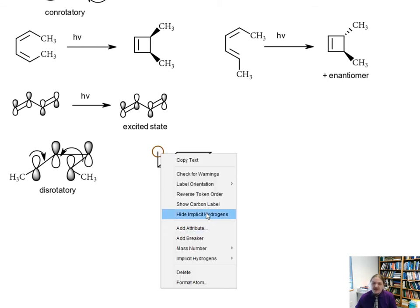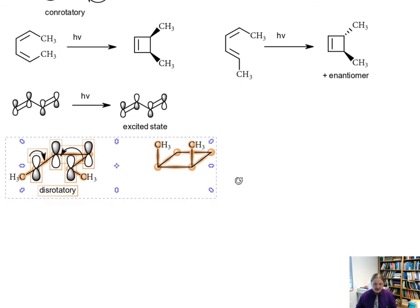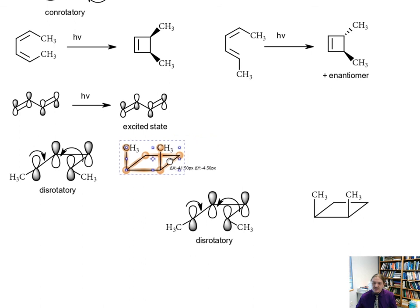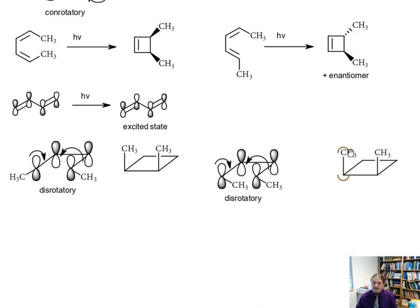In this case here we get syn when the two methyl groups are pointed to the outside or to the inside. And if we had the case where the two methyl groups were pointed one outside, one inside, then one methyl group would rotate down and the other methyl group would rotate up. Or if we got rotation in the other disrotatory fashion we get the other enantiomer.